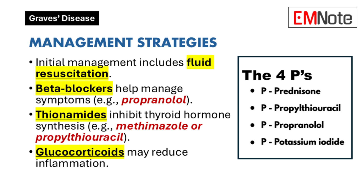Management: Initial management focuses on stabilizing the patient. This includes fluid resuscitation to address dehydration and the administration of beta blockers, such as propranolol at doses ranging from 60 to 80 mg taken orally every 4 to 6 hours, or through intravenous administration. Thionamides, such as methimazole, are utilized to inhibit the synthesis of thyroid hormones. Glucocorticoids may also be indicated to reduce inflammation and inhibit the conversion of inactive thyroid hormone to its active form.